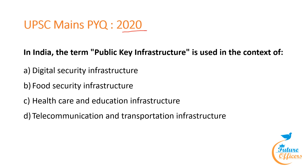A UPSC Prelims question from 2020: 'In India, the term public key infrastructure is used in the context of which of the following: digital security infrastructure, food security infrastructure, health and care education infrastructure, or telecommunication and transportation infrastructure?' The answer is: digital security infrastructure.